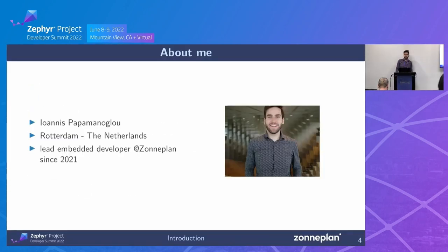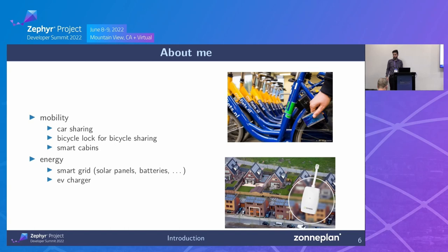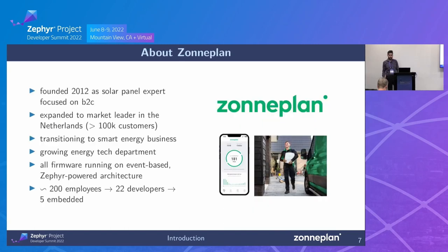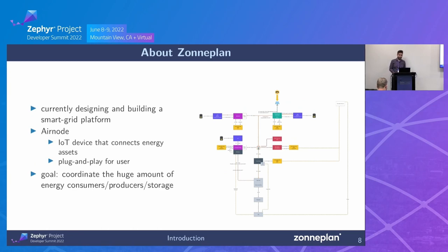My name is Ioannes Papamaneglou. I'm based in Rotterdam, the Netherlands, and currently the lead embedded developer for Zonneplan. I've been working with Zephyr for about three years now. My main contribution has been a macro mess of DTINS for each, which has been replaced with pre-compiled stuff. I'm especially focused on mobility and energy at Zonneplan, where we're transitioning from solar panels to becoming a whole smart grid business, coordinating thousands of devices that are producing, consuming, or storing energy.